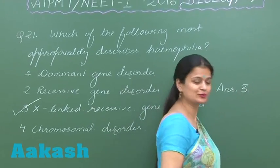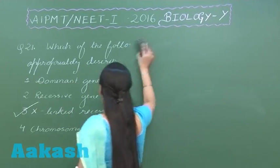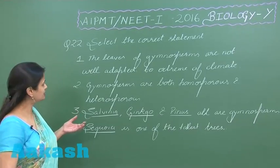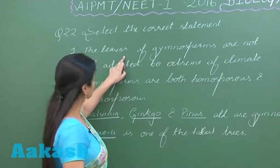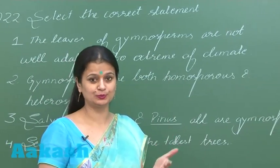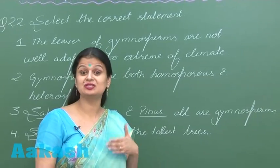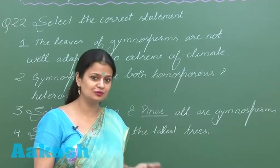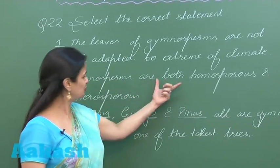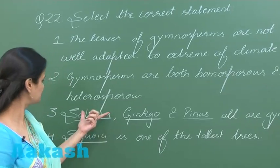Let's discuss the next question. Here we have to look for the correct statement. First: leaves of gymnosperms are not adapted to extremes of climate — no, the leaves of gymnosperms are adapted to stress conditions like xerophytic conditions. Second: gymnosperms are both homosporous and heterosporous — no, all gymnosperms are heterosporous.